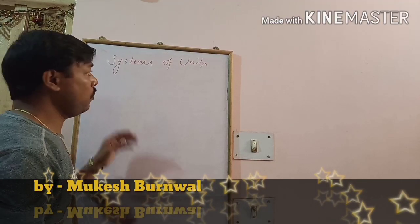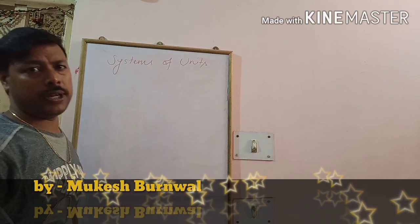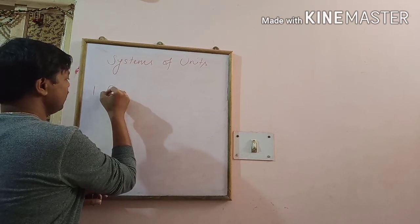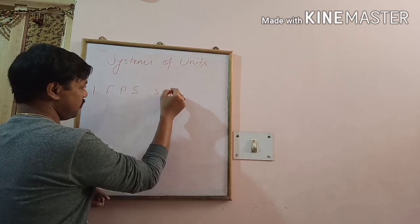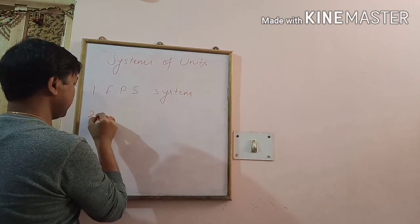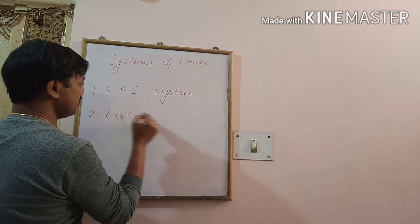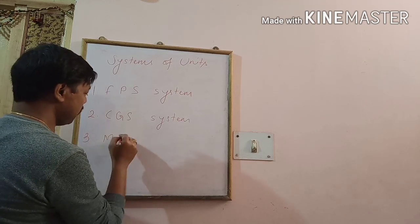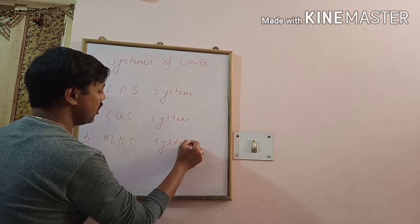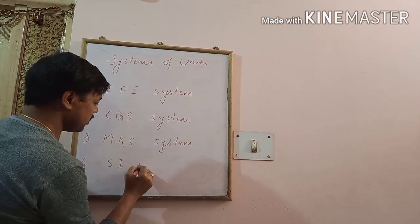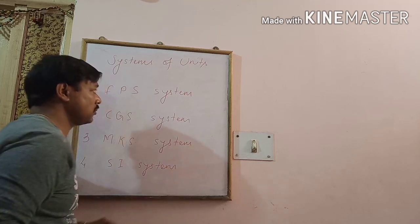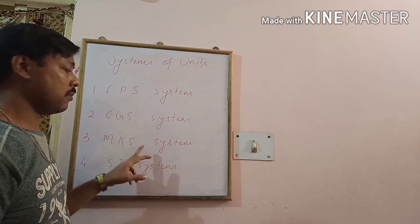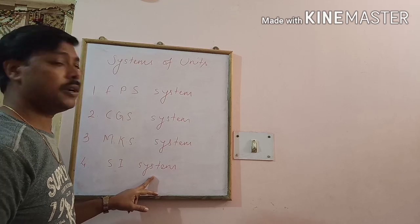We have different systems of units to measure physical quantities. The first is the FPS system, also called the British system. The second is the CGS system, also called the French system. The third is the MKS system, also called the metric system of units. The fourth is the SI system, the international system of units.